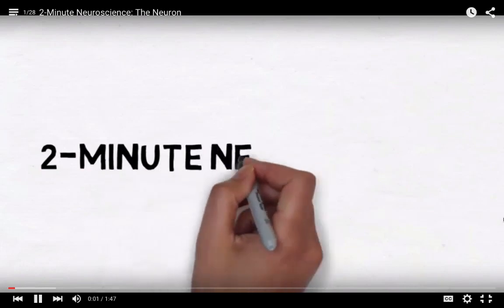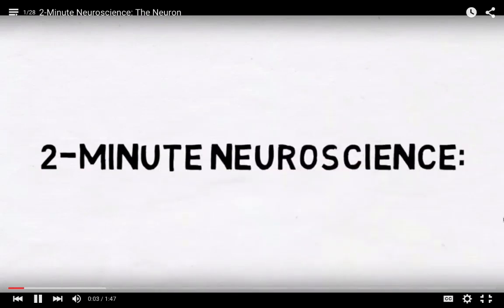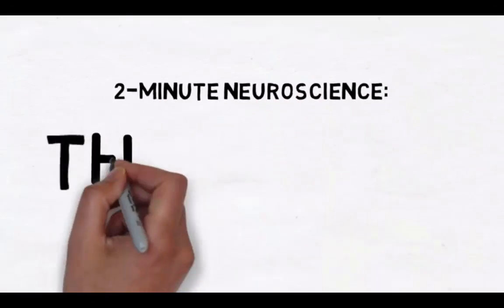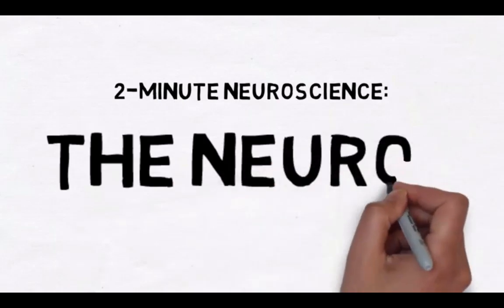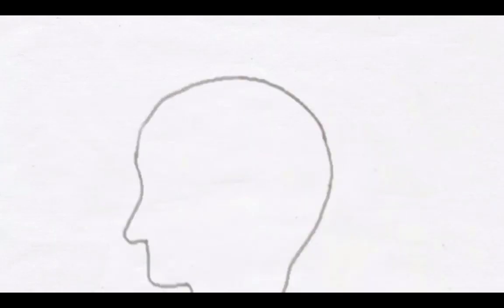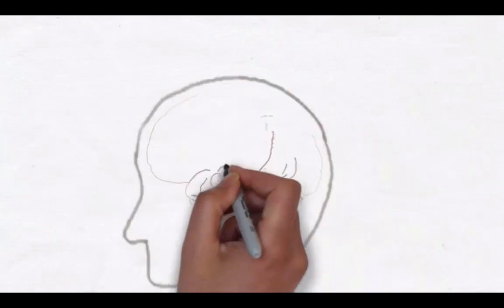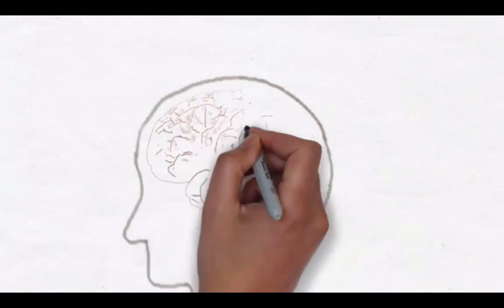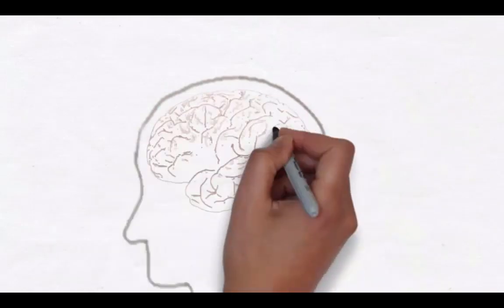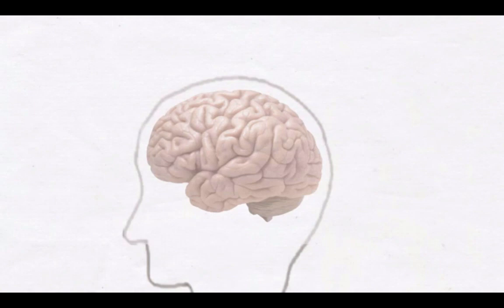Welcome to 2-Minute Neuroscience, where I simplistically explain neuroscience topics in 2 minutes or less. In this installment, I will discuss the neuron. This is a brain. Estimates vary, but right now the best guess seems to be that our brains contain around 85 billion neurons. The neuron is a nerve cell, and it's the primary functional unit of the nervous system.